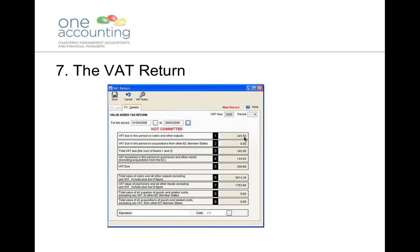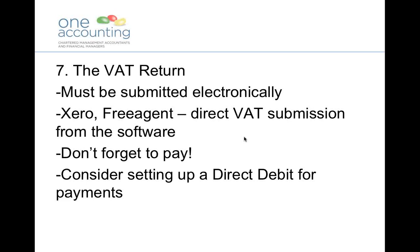Step seven: the VAT return itself. There are nine boxes on the VAT return. You need to think about sales and purchases — there's certain information on your sales that you need to disclose, and also certain information on goods and services that you've purchased. The actual VAT calculation is quite simple: you add up the VAT that you've charged on your sales, you deduct the VAT you've paid out on your purchases, and the balance is the amount you need to pay over to HMRC on a quarterly basis.